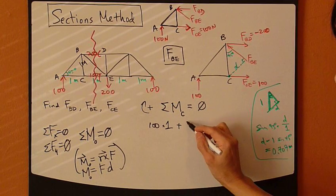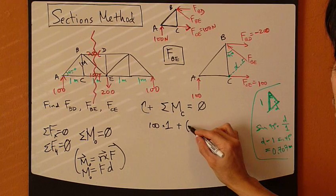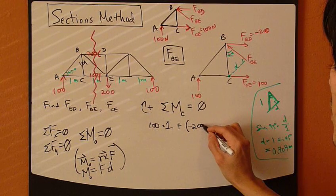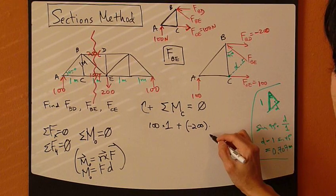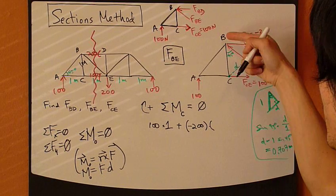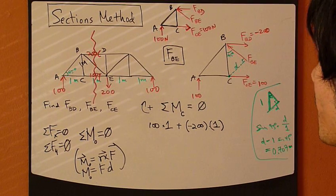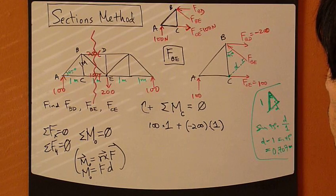However, BD from previous calculations is negative 200, times the shortest distance which is 1.